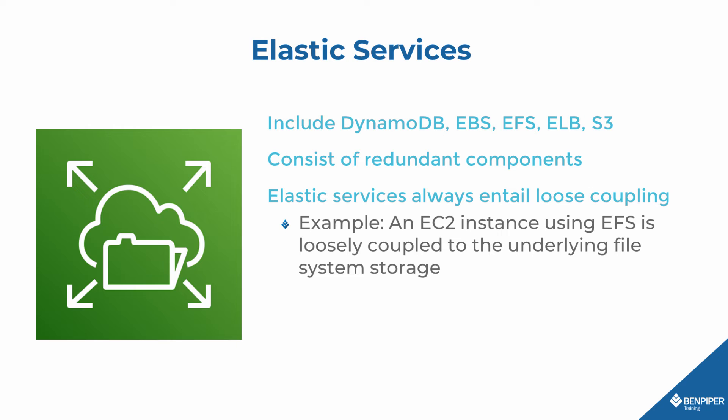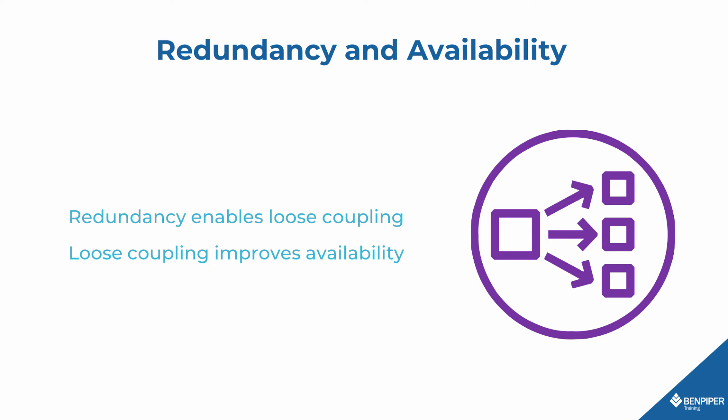Another example of loose coupling involves the Elastic File System, or EFS. Each EC2 instance depends on the EFS service. Although EFS is a single service, it's composed of redundant components — EFS just hides all that redundancy. This is true of all elastic services, including EFS, ELB, S3, and so on. Whenever you use an elastic service with another resource, such as an EC2 instance, the service and the resource are loosely coupled.